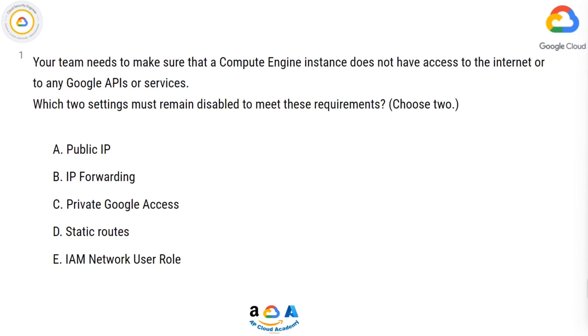Your team needs to make sure that a Compute Engine instance does not have access to the Internet or to any Google APIs or services. Which two settings must remain disabled to meet these requirements?